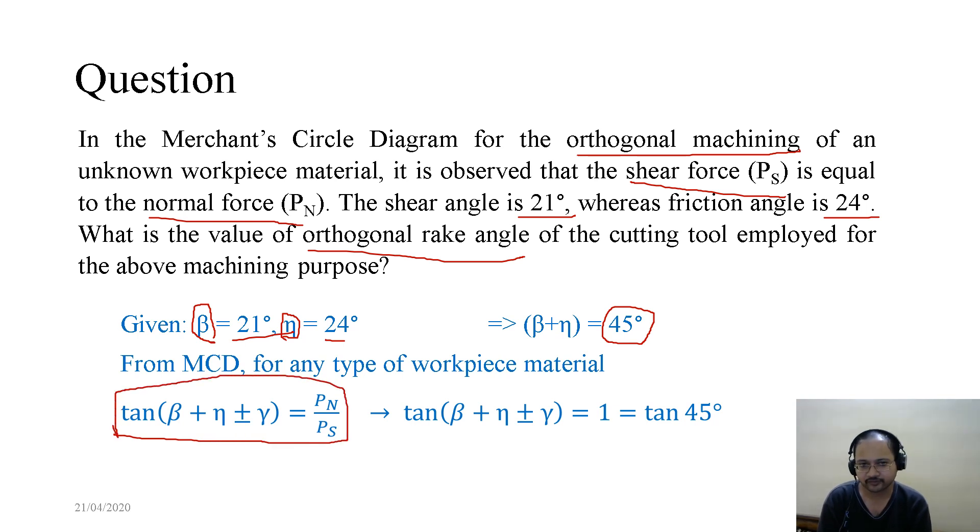When Ps is the shear force and Pn is the normal to the shear force, in the question it is mentioned that they are equal. So if they are equal, that means tan(β + η + γ) equals 1, which means β + η + γ equals 45 degrees. Since the sum of η plus β is 45 degrees, and the total expression is also giving 45 degrees, γ has to be 0 degrees. So the orthogonal rake angle is 0 degrees.